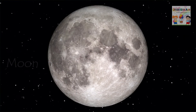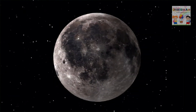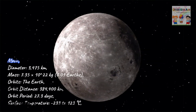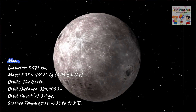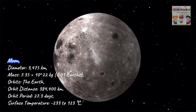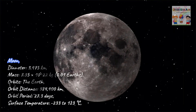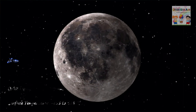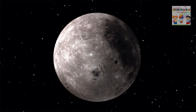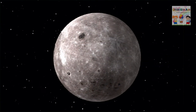Moon! Chandra! Moon, diameter: 3,475 kilometers. Mass: 7.35 times 10 to the 22 kilograms. 0.01 Earth's orbits. The Earth orbit distance: 384,400 kilometers. Orbit period: 27.3 days. Surface temperature: minus 233 to 123 degrees Celsius.